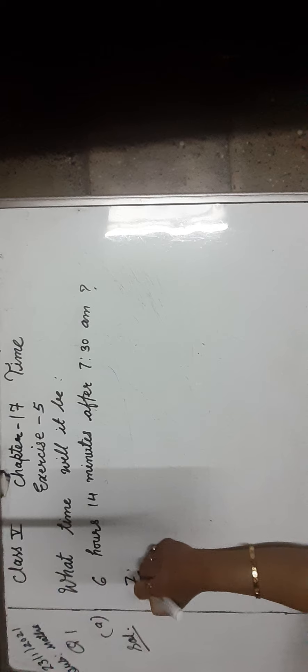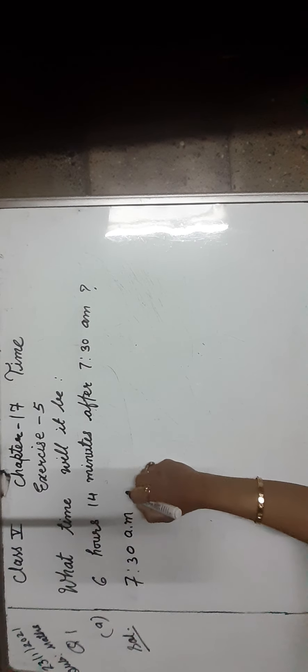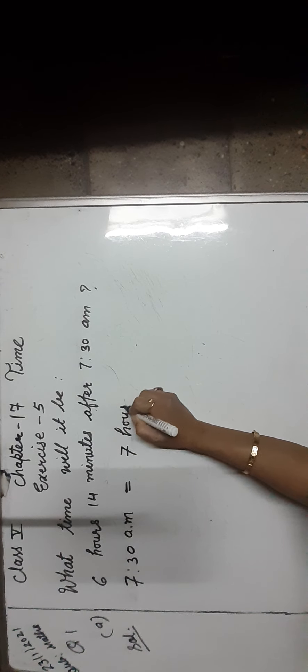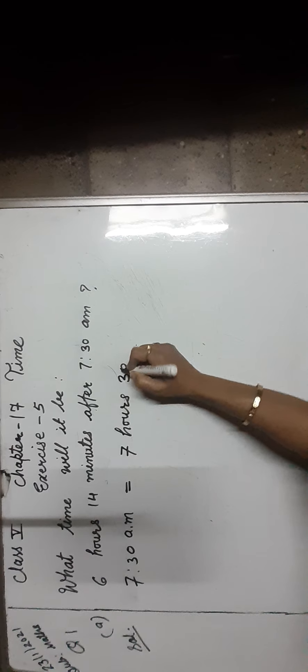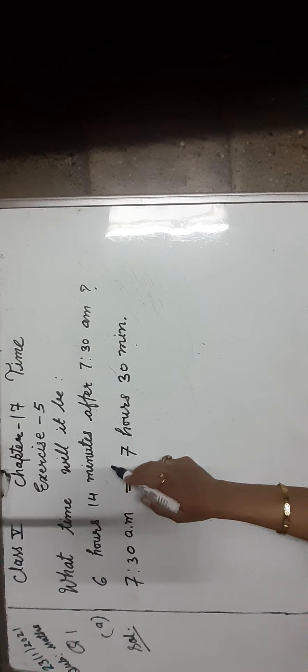First, convert the time 7:30 am into 24-hour clock time, as we learnt in the previous video. Thus, 7:30 am is equal to 7 hours 30 minutes. Add 6 hours 14 minutes.